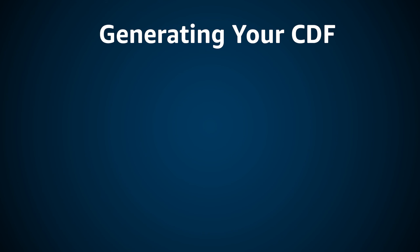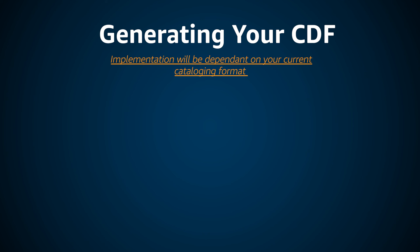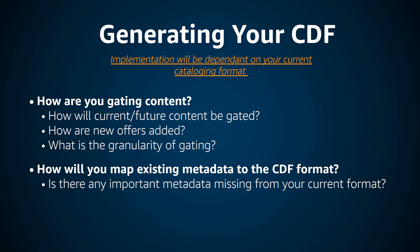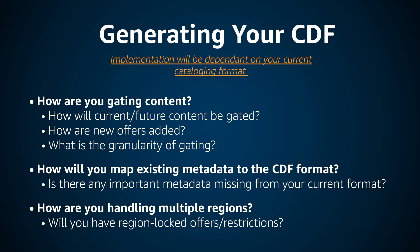Since CDFs need to be refreshed and uploaded regularly, you want to create your own generator sooner rather than later, especially if you have a large library of content. This will be based on how you currently store and catalog your own content, but here are a few things to ask yourself when planning out the architecture of your generator: how you want to handle gating and offer windows, how you determine what current and future content is eligible for viewing, how the time window will be set, and the granularity for any restrictions. You'll also want to consider how you'll map existing metadata to CDF schema elements and whether any important metadata is missing. Finally, consider how you're handling multiple regions and whether you'll have any region-specific offers.